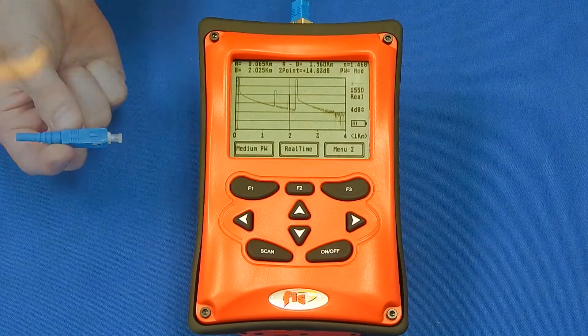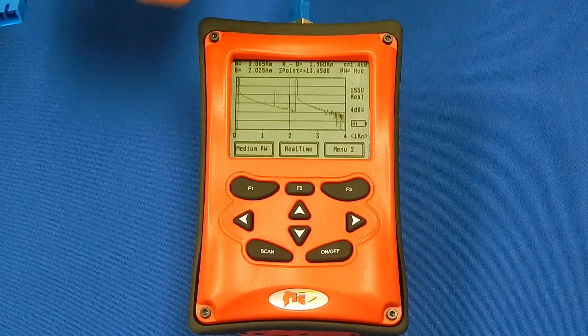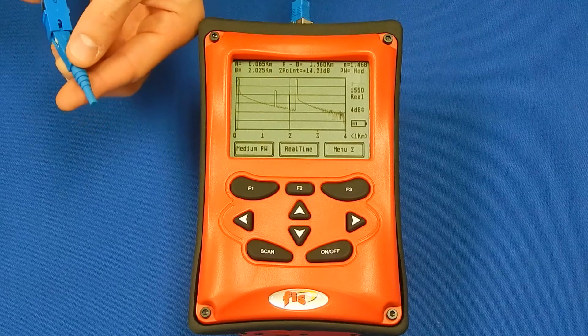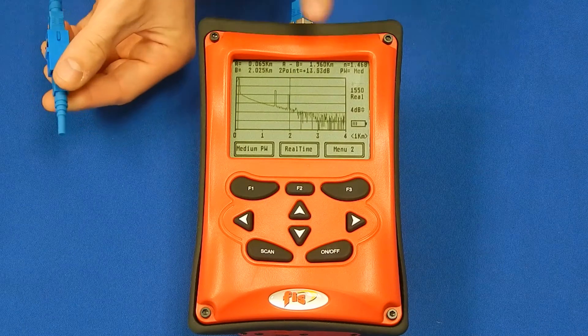Using a fiber optic terminator at the end of the fiber under test will significantly reduce the end connector back reflection as seen here.